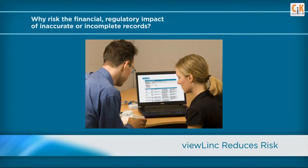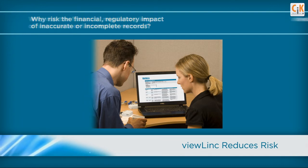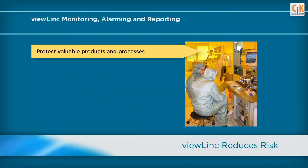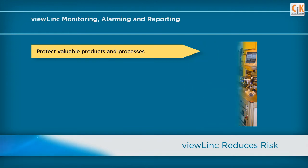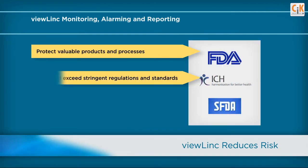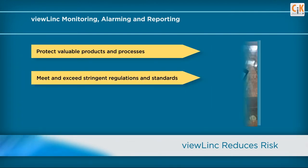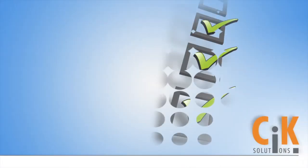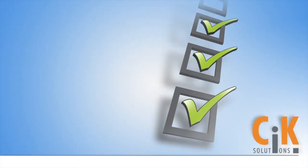Why risk the financial or regulatory impact of inaccurate or incomplete records? ViewLink protects valuable products and processes, helps you meet and exceed stringent regulations, and automates essential tasks. ViewLink reduces the risks of product loss and regulatory non-compliance.